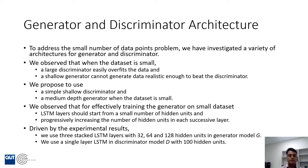We also observed that to effectively train the generator on a small dataset, we need to start LSTM layers with a small number of hidden units, then progressively increase the number of hidden units in subsequent layers. Based on experimental results, we use three LSTM layers for our generator model: the first layer uses 32 hidden units, the second layer uses 64 hidden units, and the third layer uses 128 hidden units. For the discriminator,